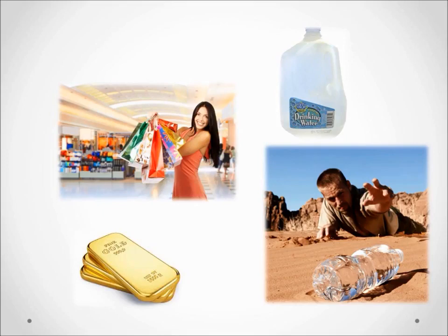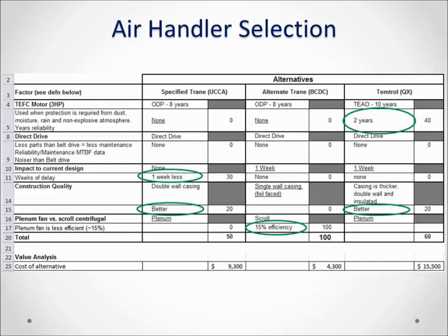Here is an example of an actual CBA for an air handler selection for a mechanical space application where the scenario did matter. Typically the company's standards called for a high-end unit regardless of the application; however, the team questioned whether this was the best use of project money. After conducting a CBA work session, based on the scenario for a mechanical space — not a manufacturing space as the standard intended — the low-end unit was selected. The reason for the decision was not lowest cost, but energy efficiency, which was the paramount advantage for this scenario.